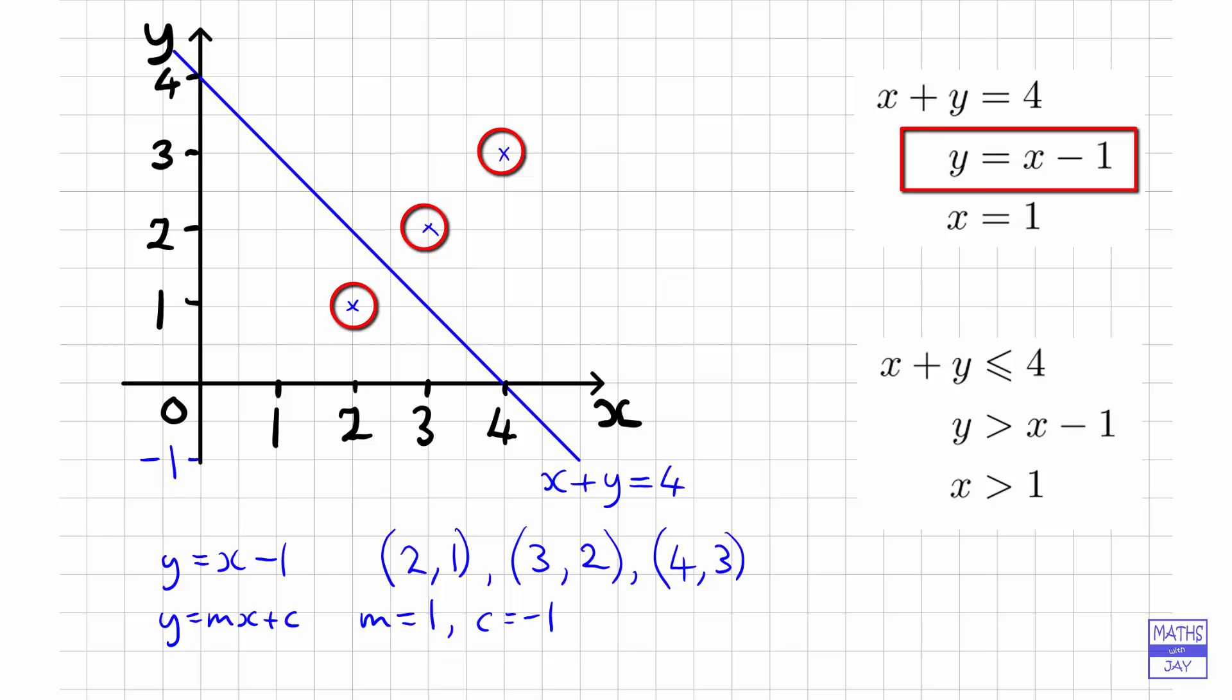Whichever way you choose it should come out to be the same thing. So that's the line y equals x minus 1. And then the last line is the simplest one I think, because it's just x equals 1. We want the line where all the x values are equal to 1.